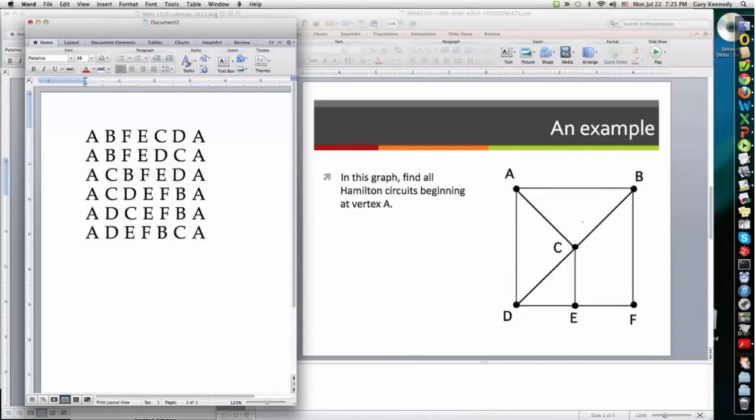Now, why did I say that three was also a correct answer? Well, that's because, as you may already have observed, if I, for example, take the first one that I've listed here, A, B, F, E, C, D, A, and read it backwards. That is to say, follow the Hamilton circuit in reverse, I get another one of the possibilities on my list. Here it is, A, D, C, E, F, B, A.